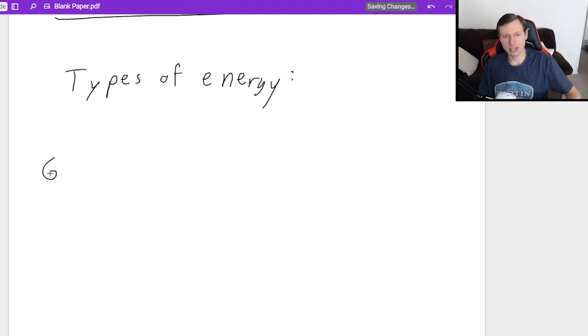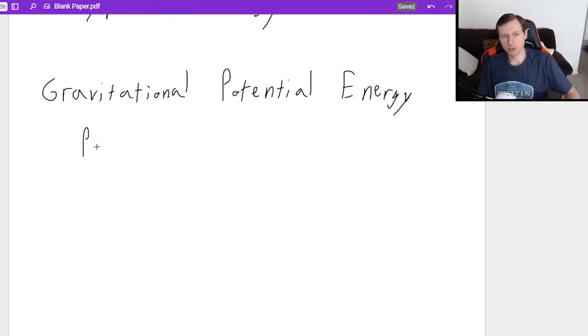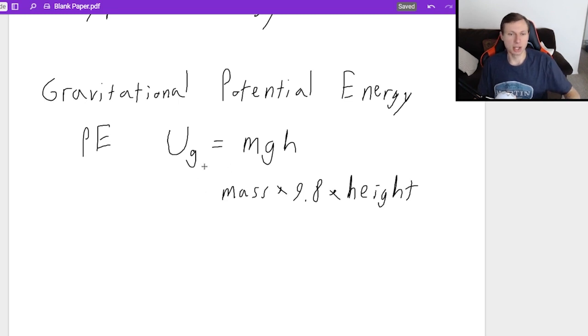The first kind is gravitational potential energy. I've seen different symbols for this. Some people use PE for potential energy. Most physics textbooks use the expression U sub G. That is just equal to MGH, the mass times the acceleration of gravity, which is 9.8, positive 9.8, and then times a height. You will have it whenever you have a height. If you are overlooking a really high cliff, you have potential energy.